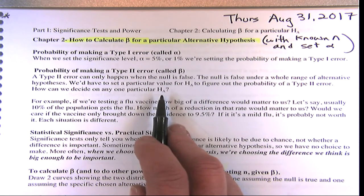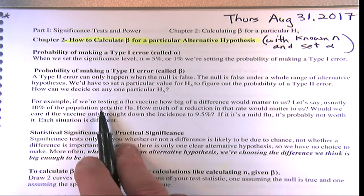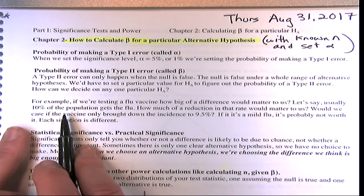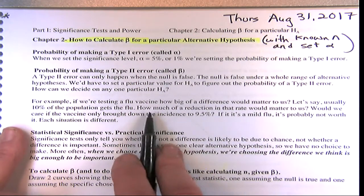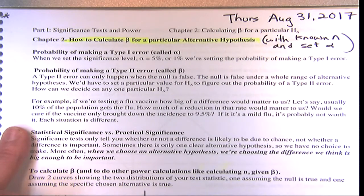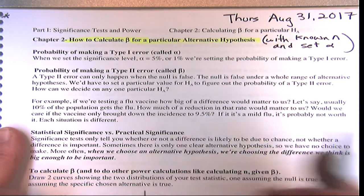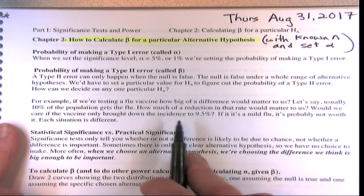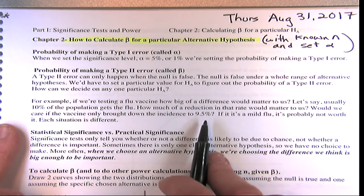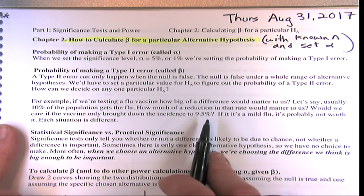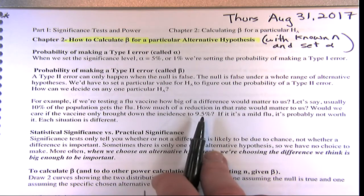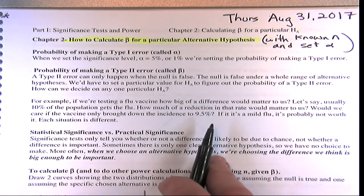The question is: how do we decide on this particular hypothesized value? For example, if we're testing a flu vaccine and usually 10% of the population gets the flu, how much of a reduction would matter to us? Would we care to detect a reduction only to 9.5%? How big a difference matters is a very subjective question.